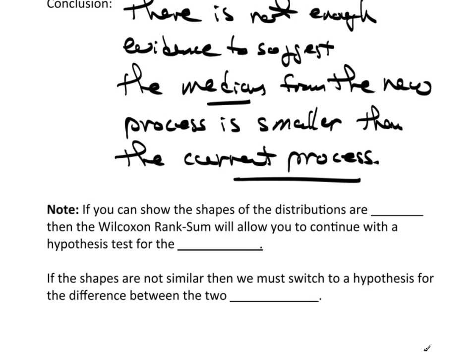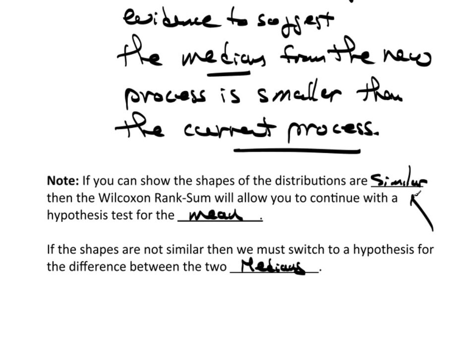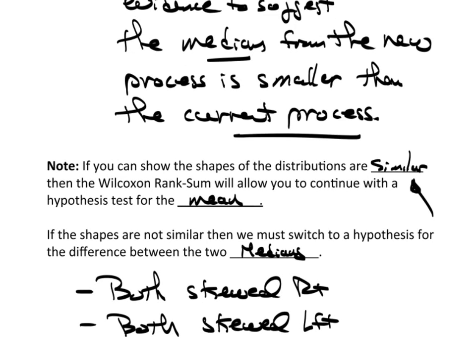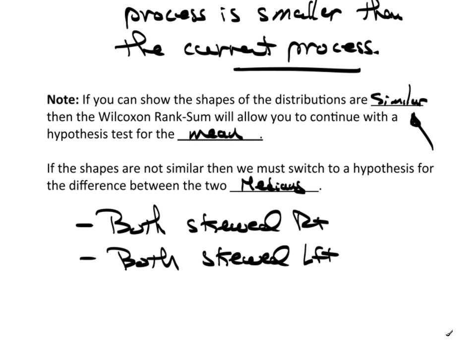Now, there's one more thing that's kind of cool about the Wilcoxon rank sum. If you can show the shapes of the distributions are similar, then the Wilcoxon rank sum will actually allow you to continue the hypothesis test for the mean. If the shapes are not similar, then you have to switch and look at the differences between the two medians. And by similar, what I mean is, as an example, both are skewed right or both are skewed left.